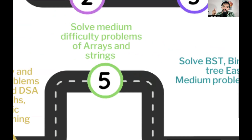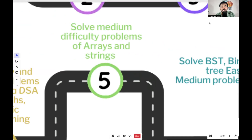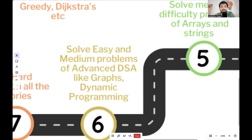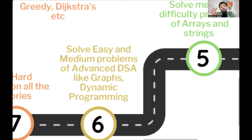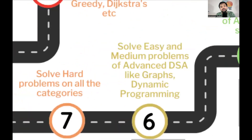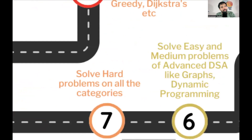Step six: after completing array and string easy and medium problems and binary tree easy and medium problems, start solving advanced techniques — graphs and dynamic programming — at easy and medium difficulty. By this point, you know traversal techniques and have developed some analytical thinking. Given any problem, even if not the optimal solution, you'll be able to come up with something. That's the right time to tackle graphs and dynamic programming.